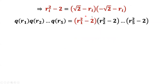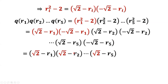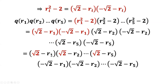Now we can rewrite each term on the right-hand side as the product of two terms and regroup the right-hand side into two parts. The first part is a product of five terms with positive square root of two. The second group is a product of five terms with negative square root of two.